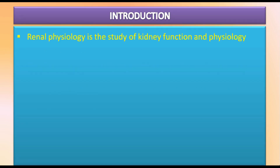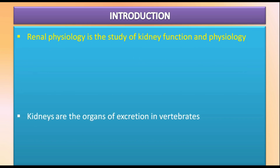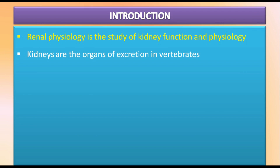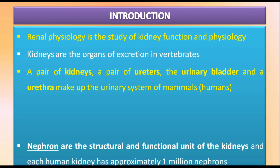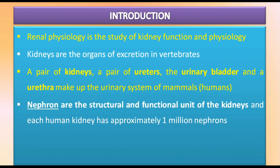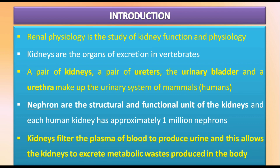Renal physiology is the study of kidney function, and the kidneys are the major organs of excretion in vertebrates. A pair of kidneys, a pair of ureters, the urinary bladder, and a urethra make up the urinary system of mammals including human beings. Nephrons are the structural and functional unit of the kidneys, and each human kidney has approximately 1 million nephrons. The function of kidneys is to filter the plasma of the blood to produce urine, allowing the kidneys to excrete metabolic wastes produced in the body.